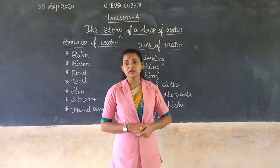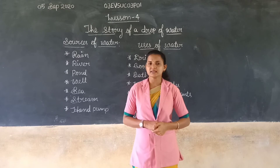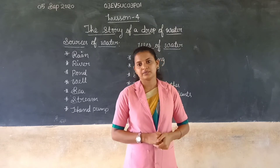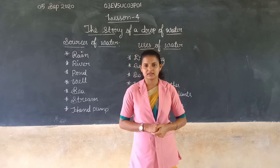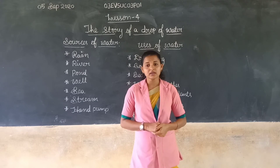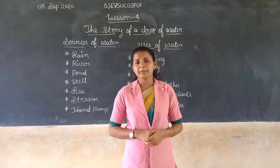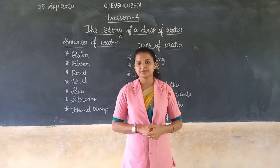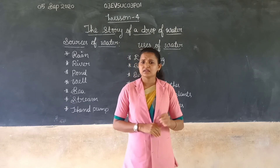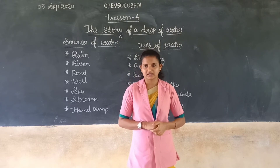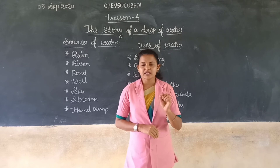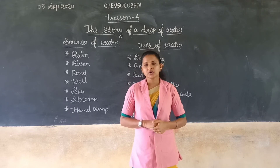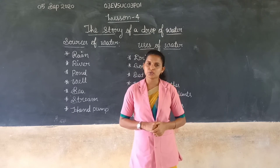How do you store water in your house and which materials are they made of? We store water in vessels such as a mud pot, copper vessels, plastic bottle, iron bucket, steel bucket, and cement. The vessels made of plastic, steel, mud, and copper are used to store water.